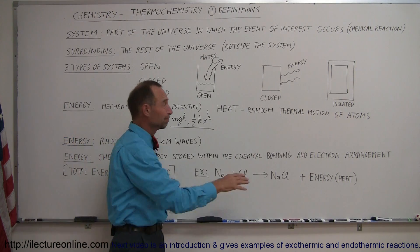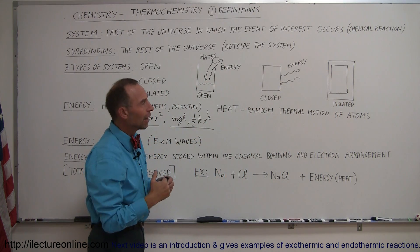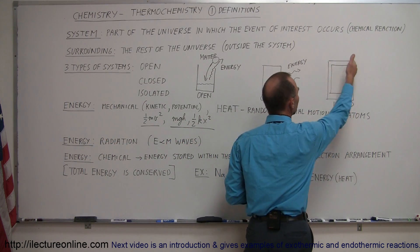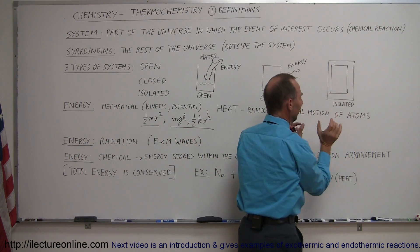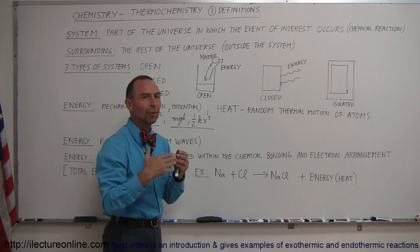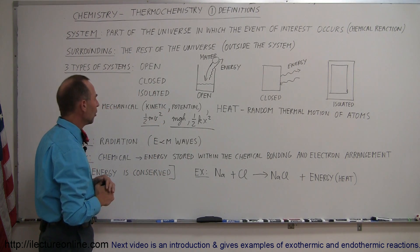Isolated system implies that something is going on in here that neither matter can go in or out, and not even energy can go in and out. So it's usually insulated. We call it an insulator, so nice thick layer of insulation, so very little of any energy can go in or out. For all practical purposes, we can say no energy has been exchanged.